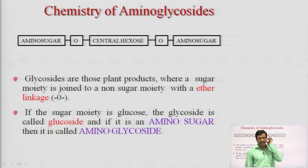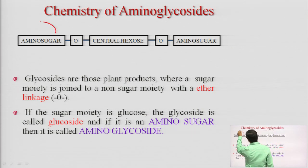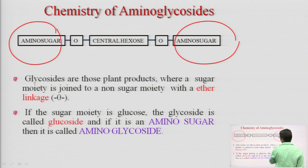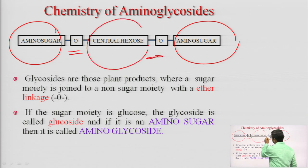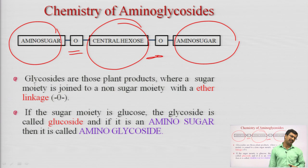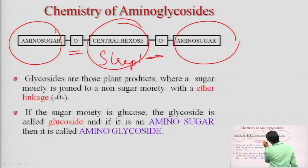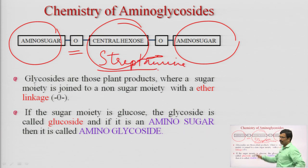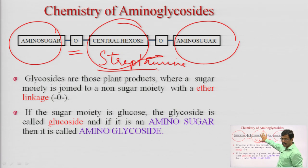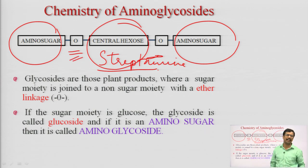Regarding the chemistry of aminoglycosides: they are made up of two amino sugars linked with glycosidic linkage and a central hexose. Generally, most aminoglycosides contain the central hexose streptamine. The amino sugar is connected with the central hexose (streptamine) via glycosidic linkage, which is why they are named aminoglycosides.